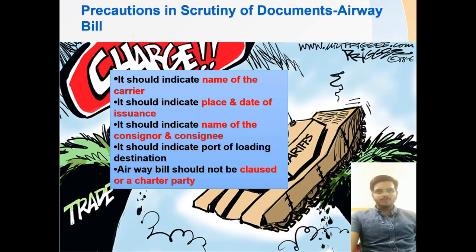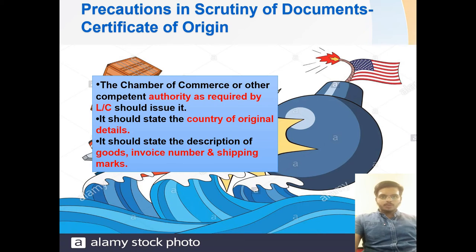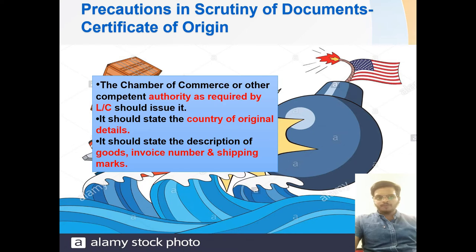For airway bills, it should indicate the name of the carrier, place and date of issuance, names of the consignor and consignee, and port of loading and destination. The airway bill should not be for a chartered party. For the certificate of origin, it should be issued by the chamber of commerce or other competent authority as required by the LC, state the country of origin details, and describe the goods with vice number and shipping marks. These are the explanations about the negotiation of documents in documentary credit.